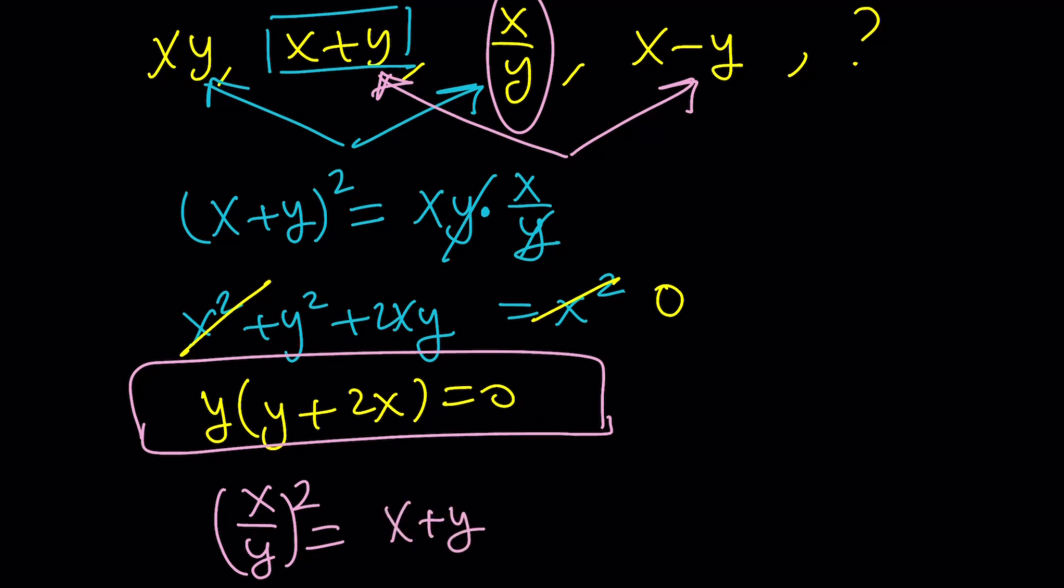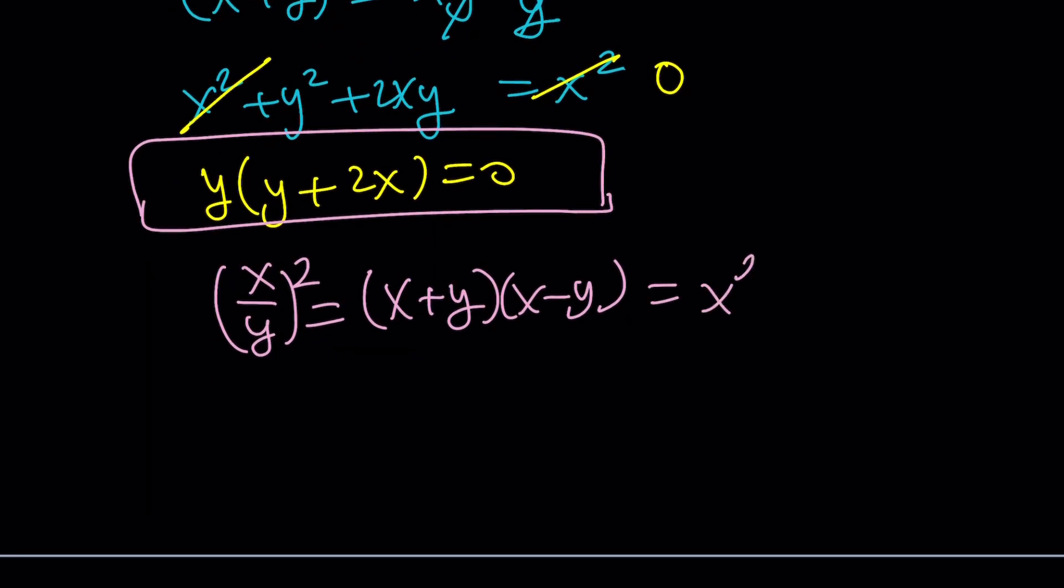And that's going to be x plus y times x minus y, which is x squared minus y squared from difference of two squares. So, we get x squared over y squared equals x squared minus y squared. Awesome. That's another equation.